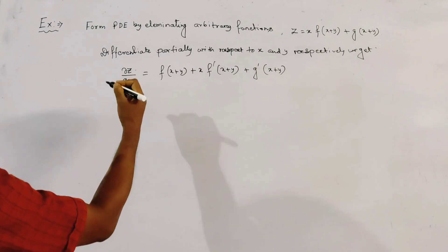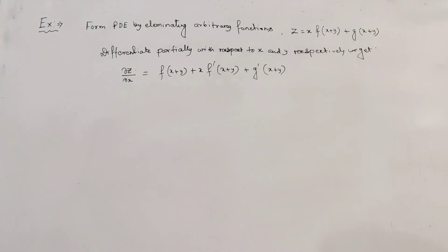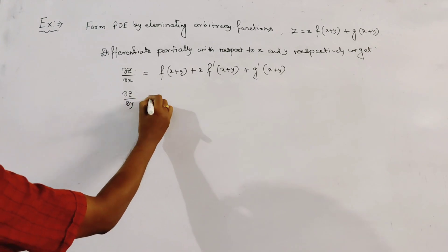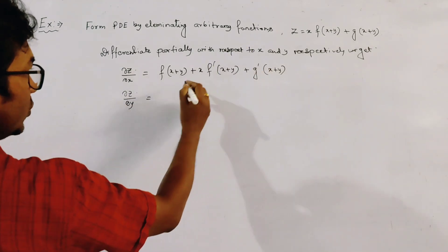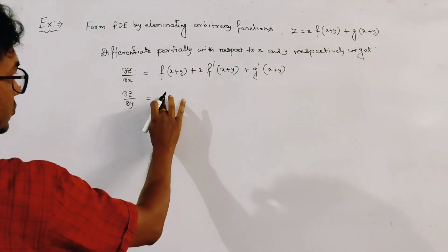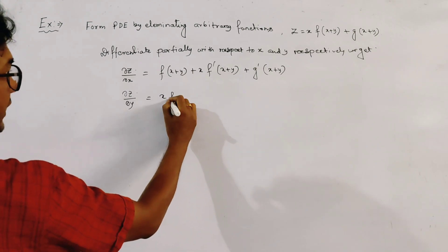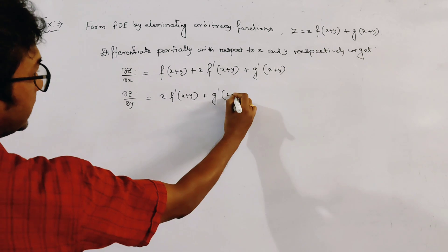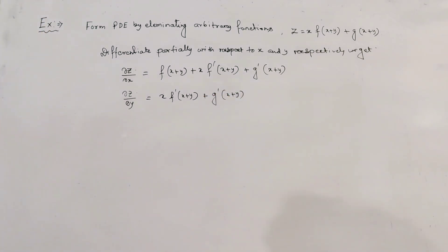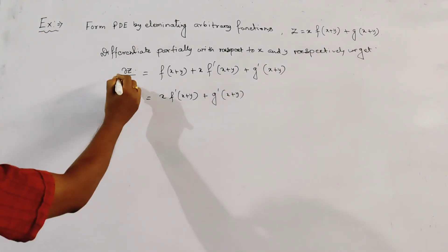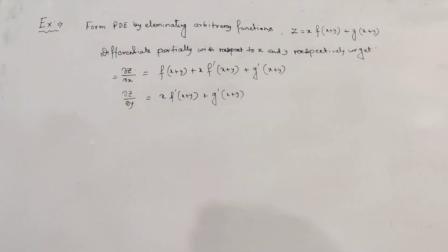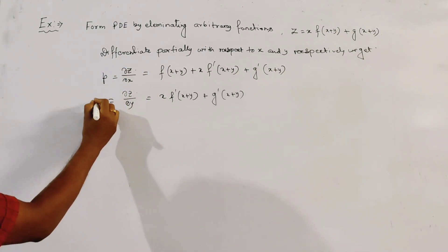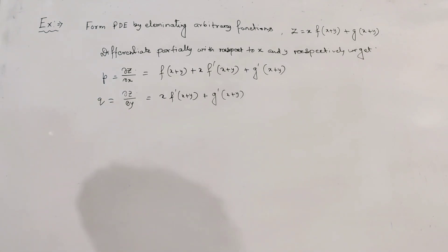Now differentiating with respect to y, we get del z by del y equal to x into f dash (x plus y) plus g dash (x plus y). In partial differential equations, del z by del x is denoted by p and del z by del y is denoted by q.